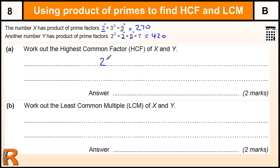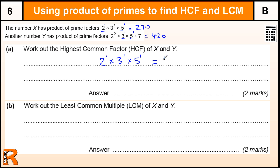So it's going to be built up of 2 to the power of 1. The highest power of 3 that will go into both of these is 3 to the power of 1, and the highest one for 5 is clearly just 5 to the power of 1. There is no 7 in this number, so we can't have 7 in our highest common factor.